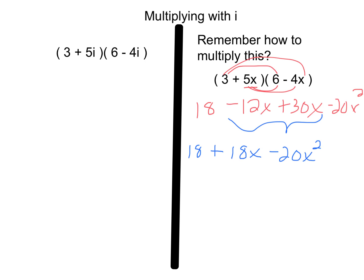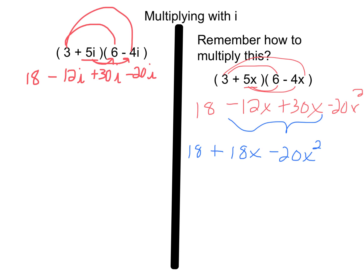Now we're going to do the same idea over here, but I have to be a little more careful. We're going to multiply this the same way we did before — either tor attack, foiling, or the box method. So: 6 times 3 is 18. 3 times negative 4i is negative 12i. 5i times 6 is 30i. And 5i times negative 4i is negative 20i squared. Before we combine like terms with imaginary roots, remember our rule: you cannot have i with exponents. Anytime you have an exponent with an i, you have to evaluate it.